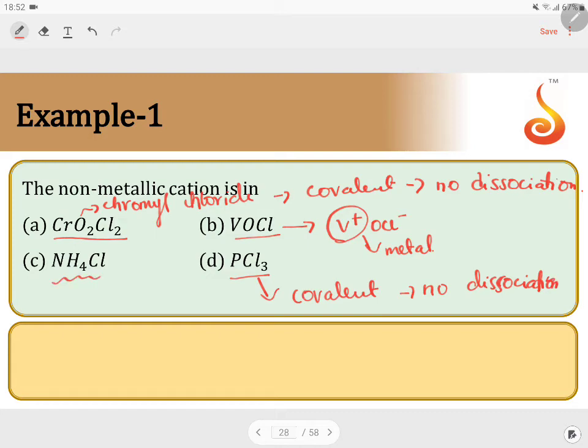If you consider NH4Cl, NH4Cl is an ionic compound that dissociates to give NH4+ and Cl-. We know that this is a cation. In this cation, both of them are non-metals. Only the salts of ammonium will have a non-metallic cation.